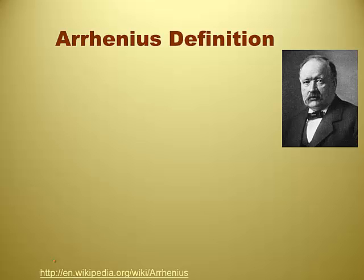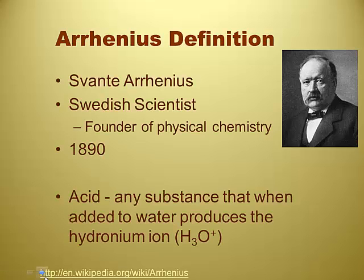So the Arrhenius definition of an acid and a base — Arrhenius was a Swedish chemist in 1890. Basically what Arrhenius said is that an acid is any substance that when added to water produces the hydronium ion. The hydronium ion is basically water with an extra hydrogen — the hydrated hydrogen ion. This guy was pretty smart because there are a couple other concepts named after him.